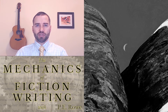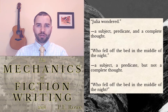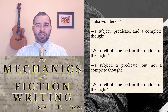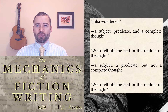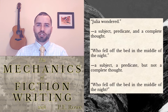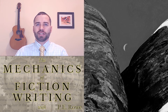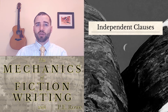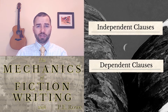Here's an example of the difference. 'Julia wondered' — a subject, a predicate, and a complete thought. 'Who fell off the bed in the middle of the night' — a subject, a predicate, but not a complete thought. This clause cannot stand on its own; it needs something else to complete it. Clauses that can stand on their own independently are called independent clauses, and clauses that depend on additional supporting information are called dependent clauses.